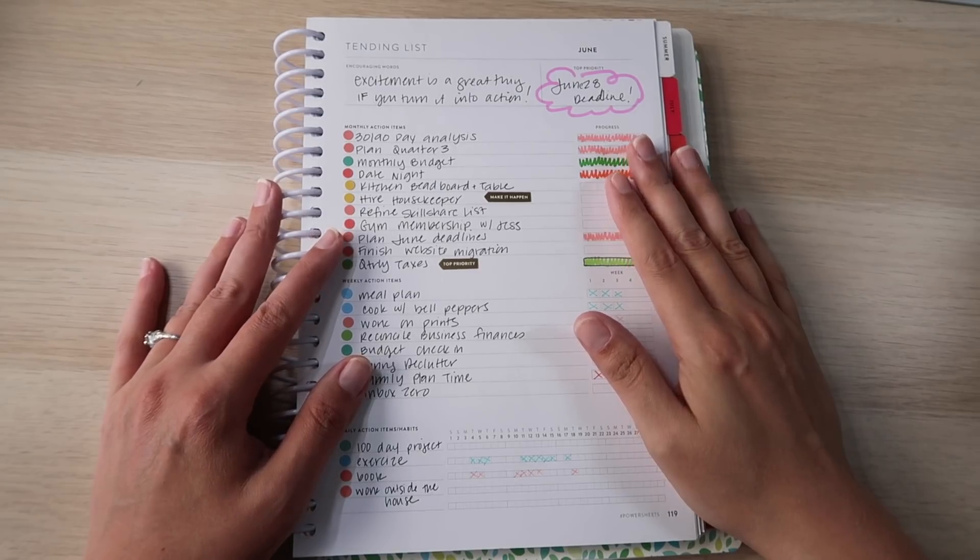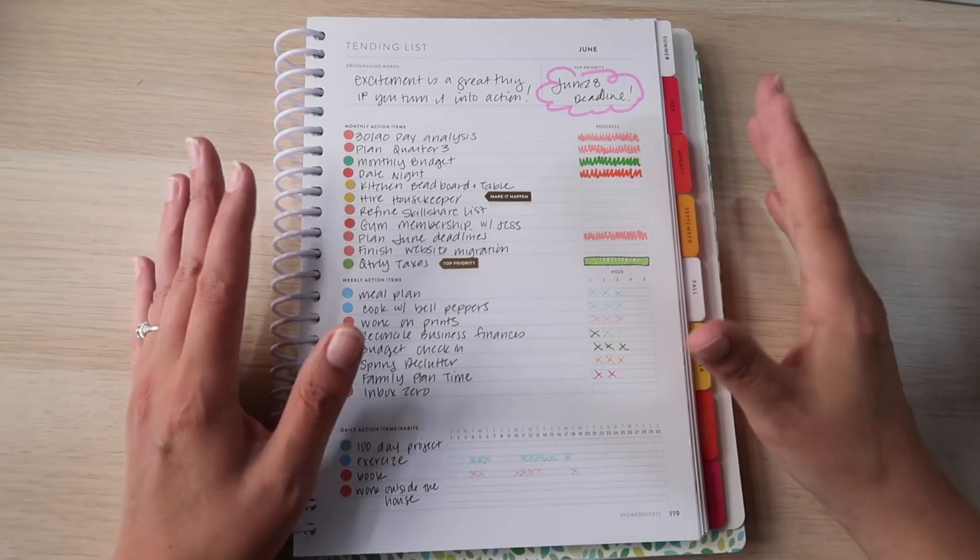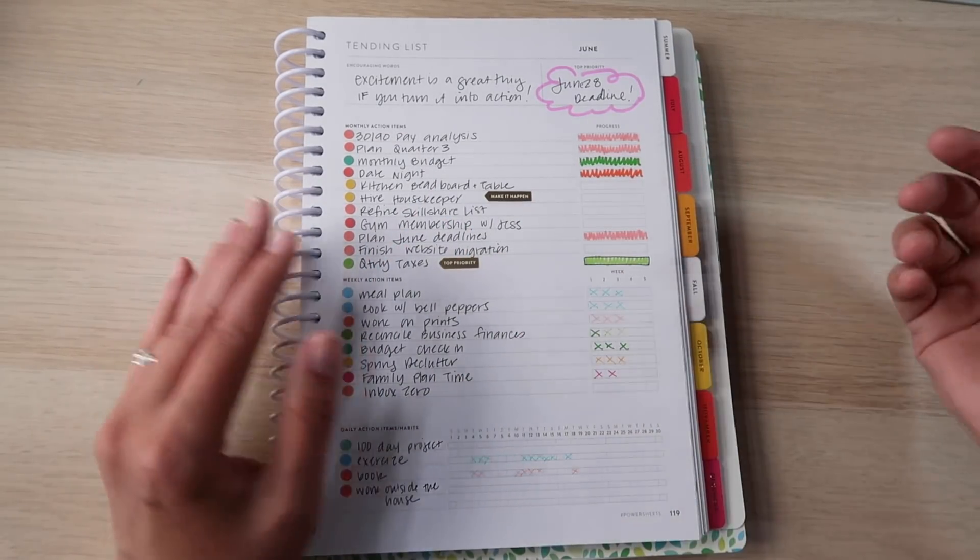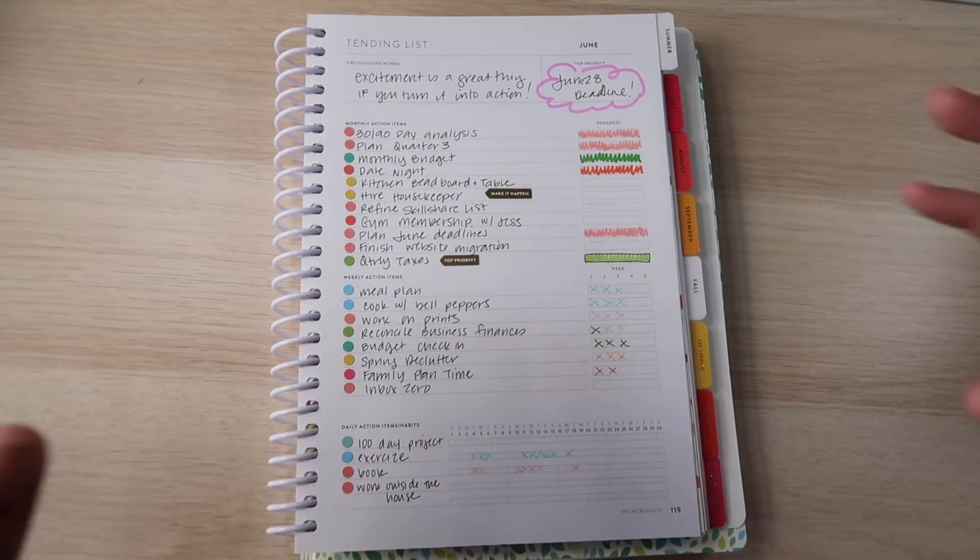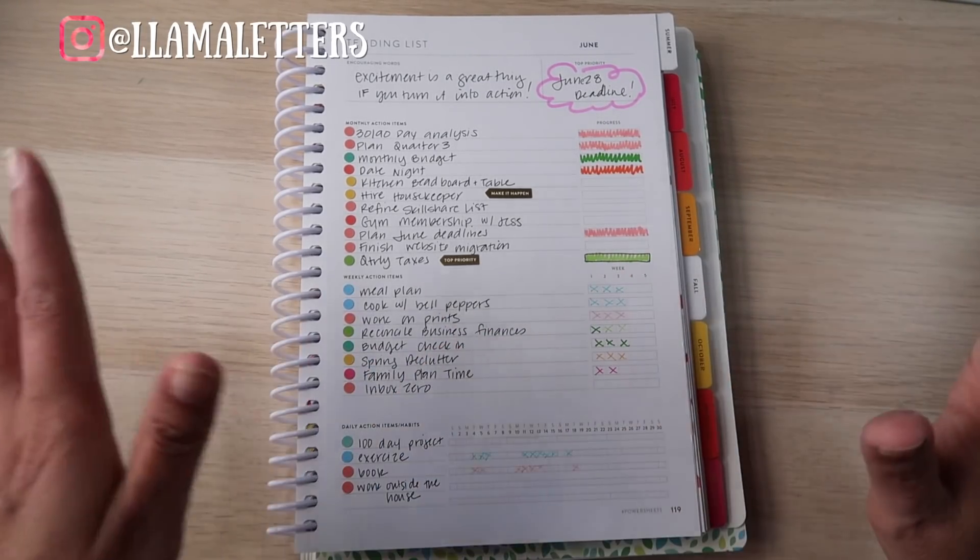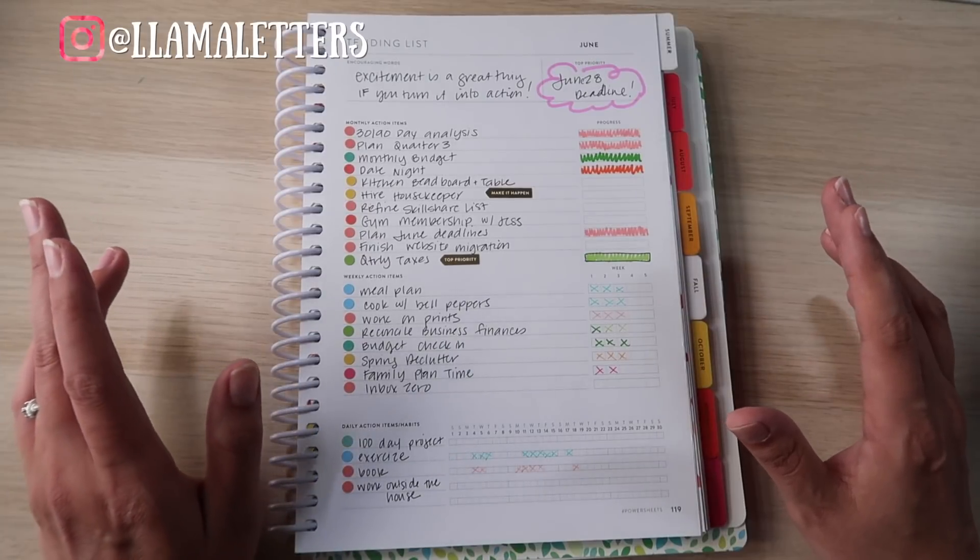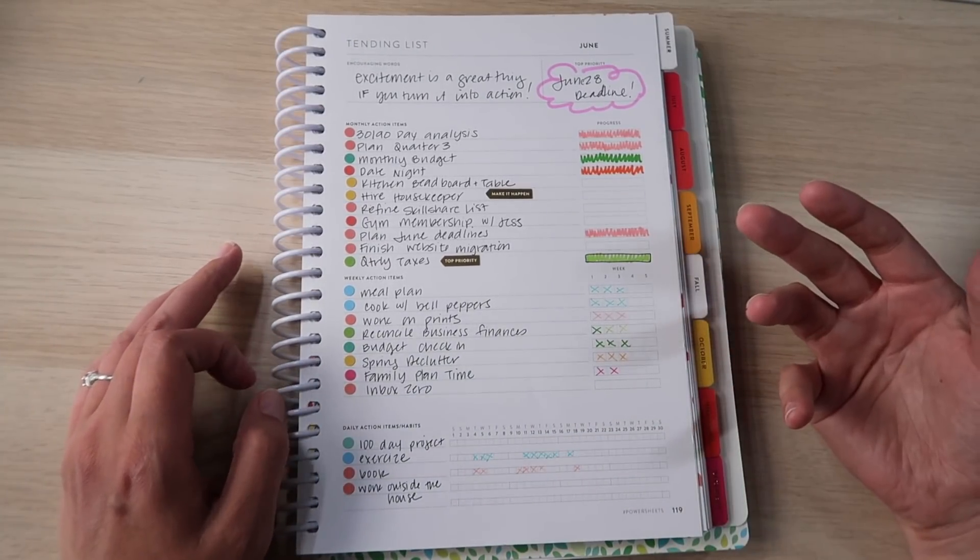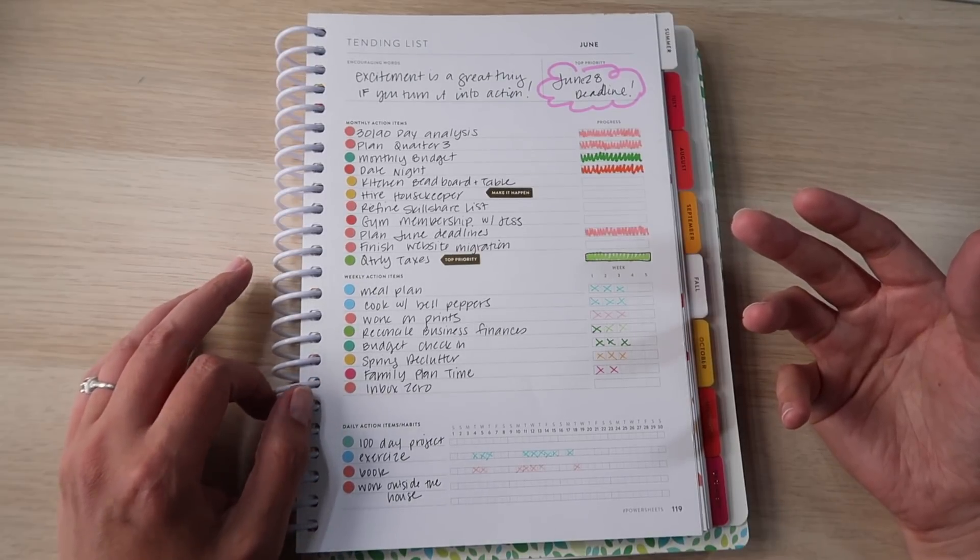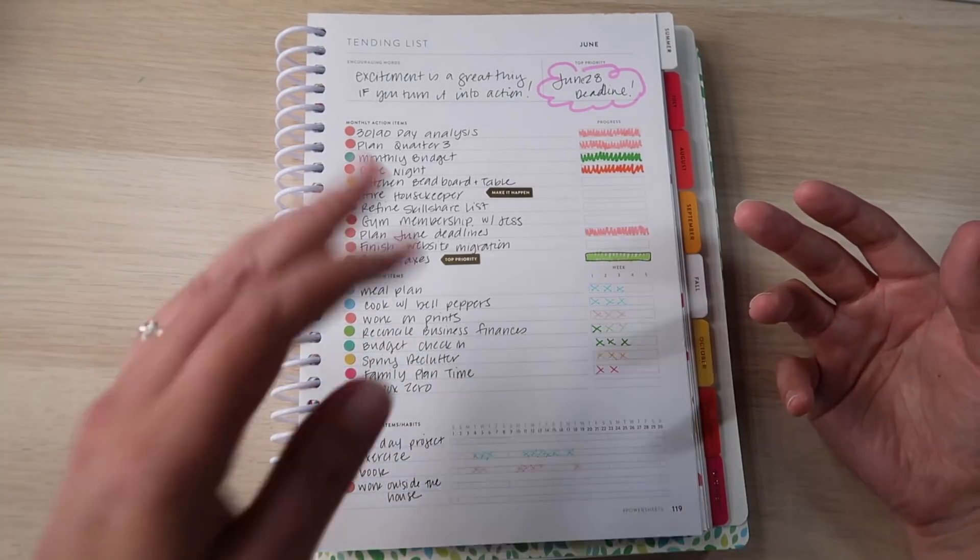Hi everybody, today I'm going to be doing my end of June check-in and also the summer extra sheets and getting ready for July, that whole thing in my power sheets. I'm just going to jump right into it. I'm actually filming this a little earlier in the month than I usually film it because right after I'm done with this, we are heading out of town for a few days and I want it to be done before we go.